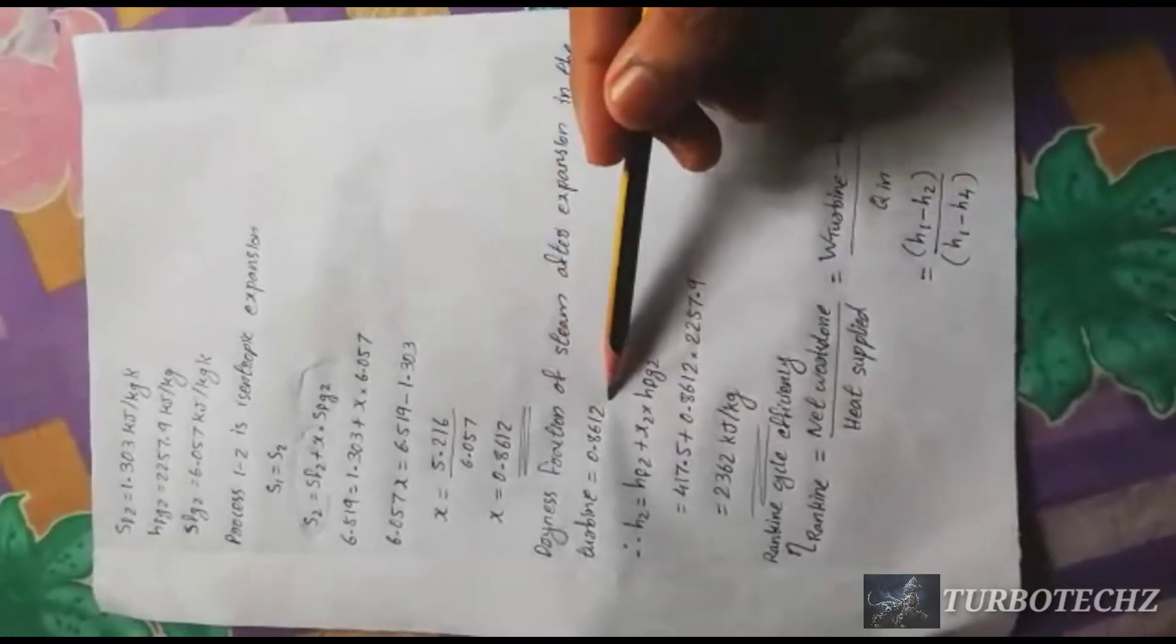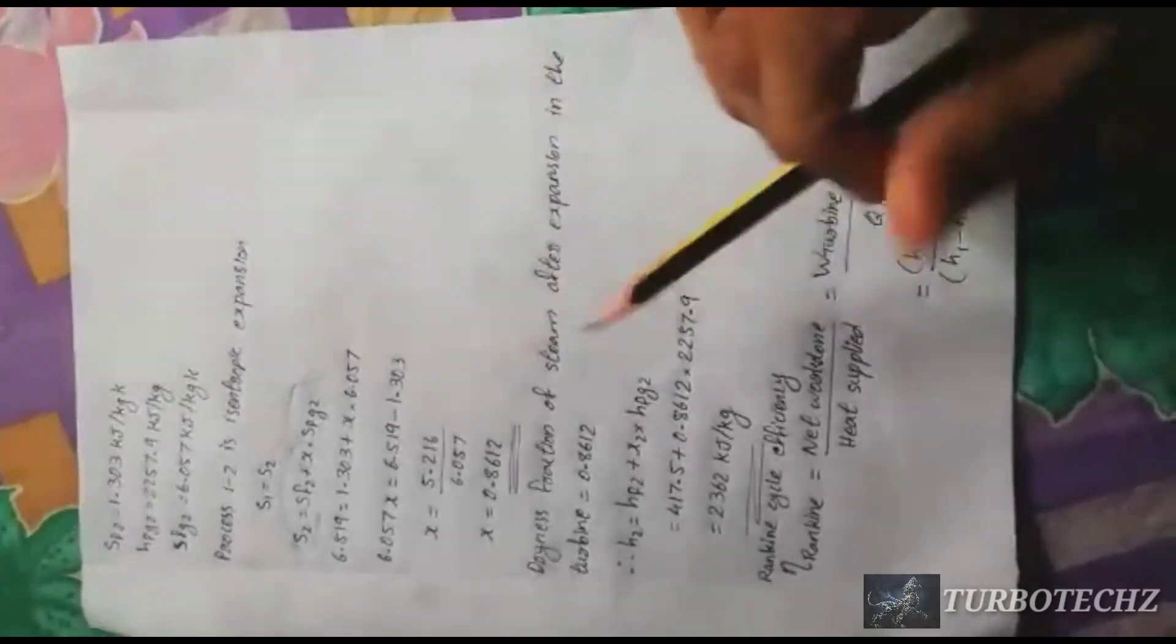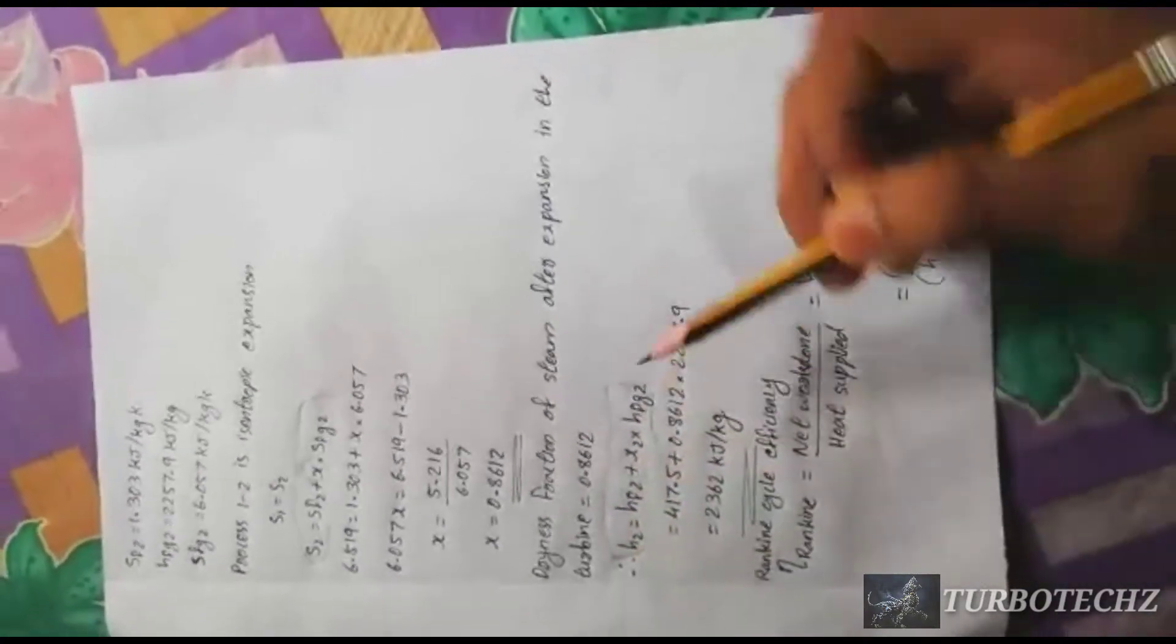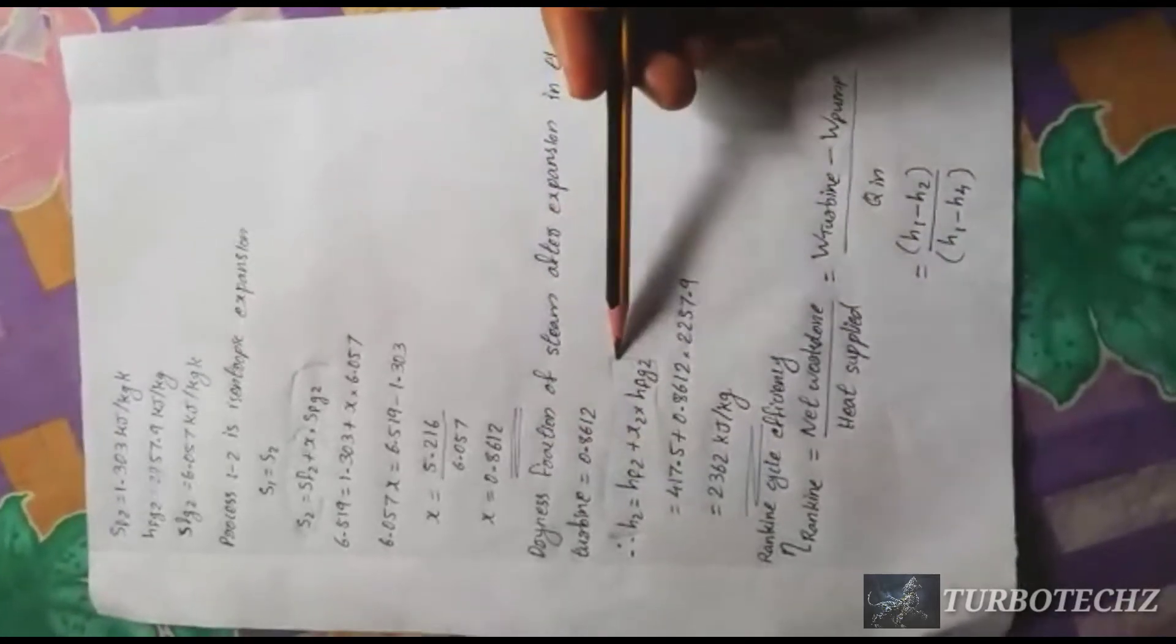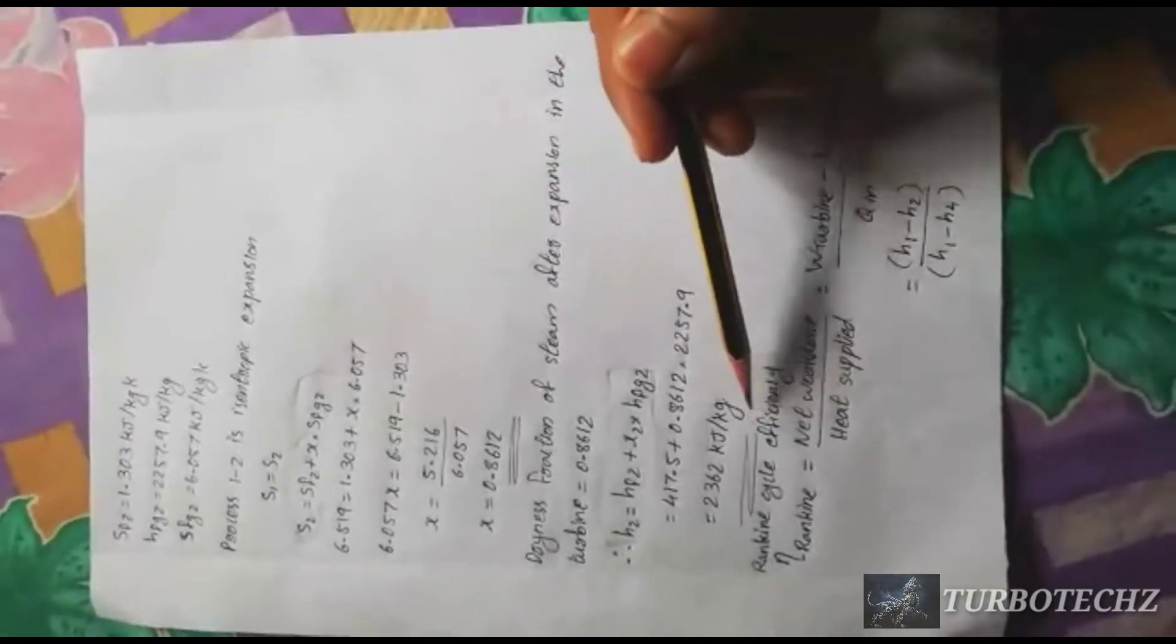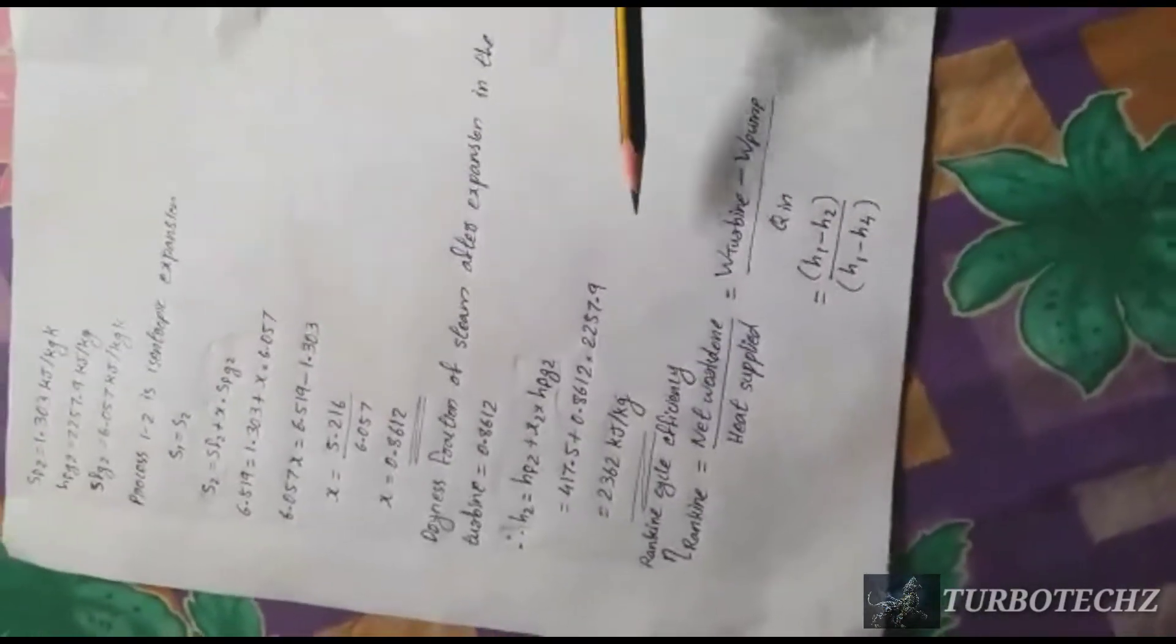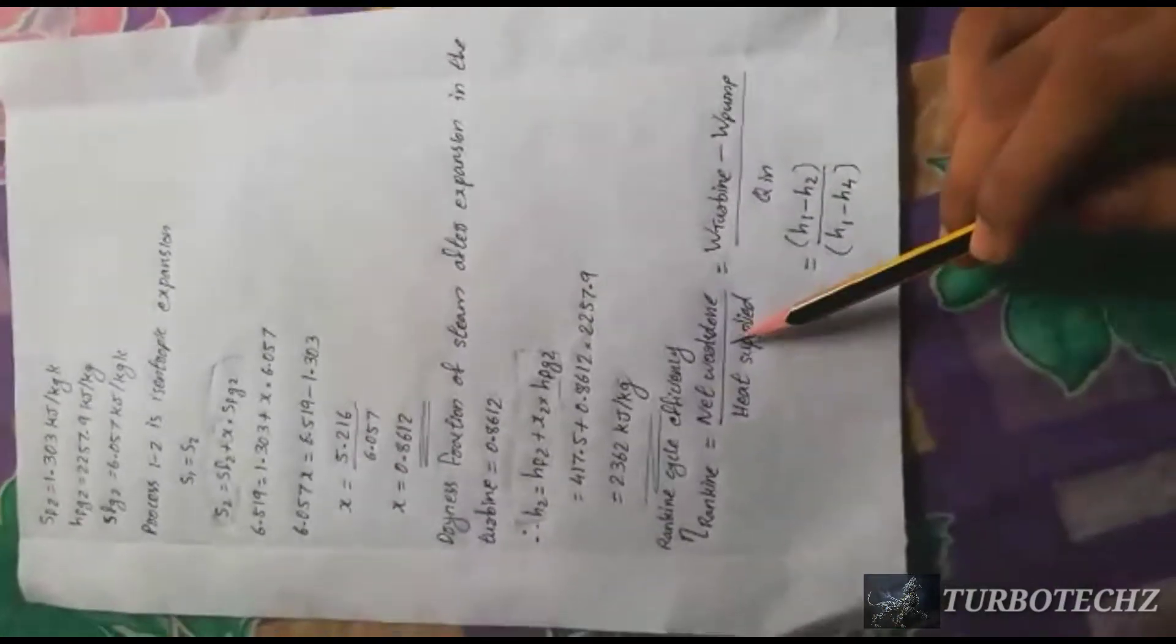Let's take this value. H2 equals hf2 plus x2 into hfg2. Let's take this value. Hfg2 is 1 bar condition. Let's take this value.